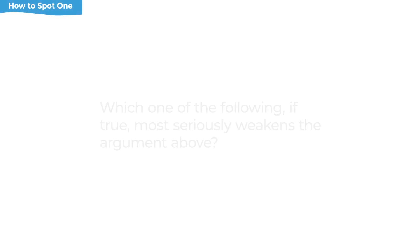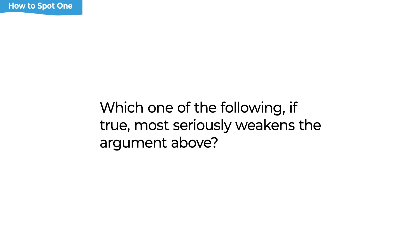The way you identify that you're on a weakened question is in the language of the question stem itself. The question stem is what sets the question type. So we're looking for language that suggests we're being asked to weaken the argument. For example: 'Which one of the following, if true, most seriously weakens the argument above?' The language 'most weakens' is the clue. That word 'most' is really common and important — we're looking for the answer that has the strongest impact. Answer choices that are too weak can get themselves into trouble, as we'll see when we look at trap answer patterns.